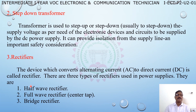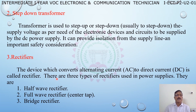Third block: rectifier. The device which converts alternating current AC to direct current DC is called a rectifier. There are three types of rectifiers used in power supplies: half wave rectifier, full wave rectifier, and bridge rectifier.